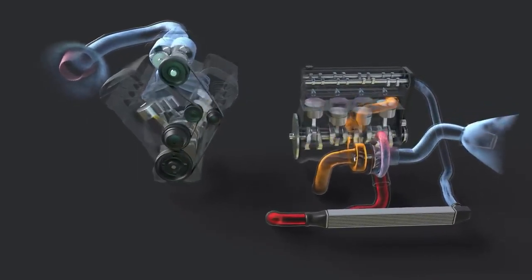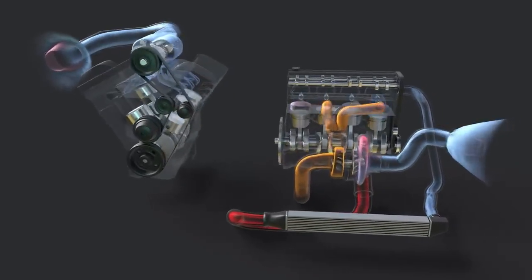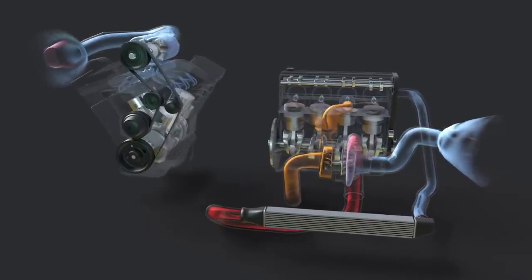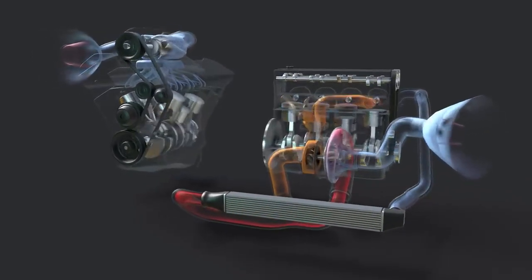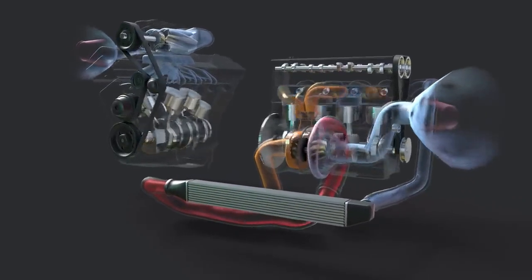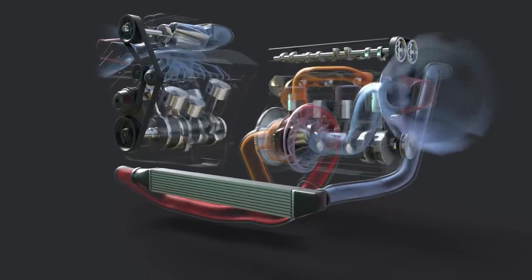Turbos might require more peripheral parts like oil and vacuum lines, an intercooler, custom exhaust manifolds and exhaust piping and so on. Turbos can require more skill to properly configure. However, a well-tuned turbo system may be able to produce boost more efficiently and in greater quantity than a supercharger.